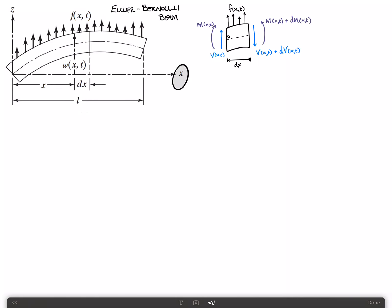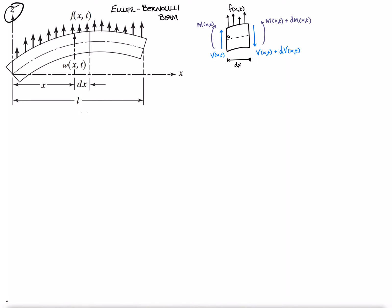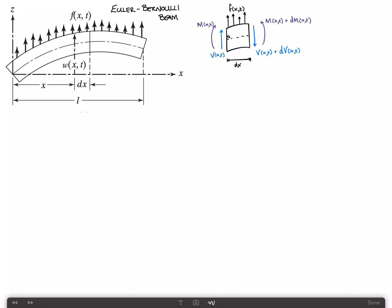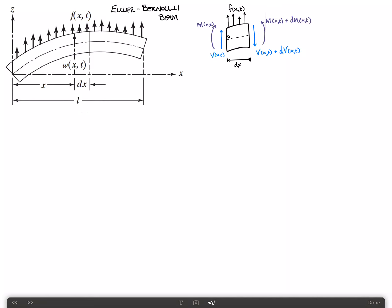My x-axis runs axially along the beam and the z-axis is transverse to the beam. I've taken a differential slice of length dx and reproduced it here to the right. By cutting it away we need to add the forces on the free body diagram. On the left-hand side we have a shearing force upwards, v. On the right-hand side the force is v plus dv, and similarly we have a moment on the left we call m and a moment on the right m plus dm. Along the length of this differential element is the distributed load f.